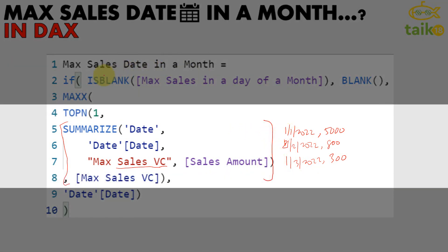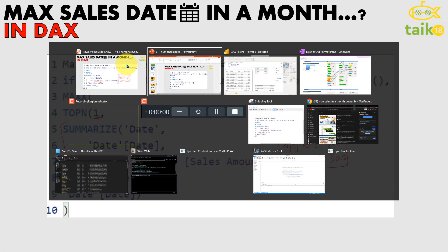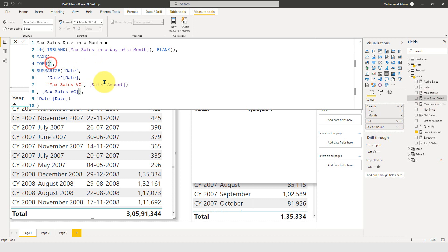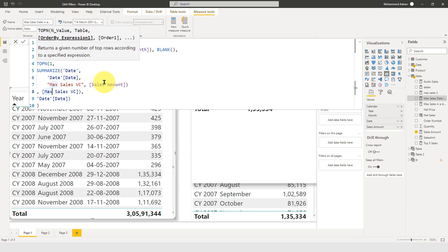After that, I'm using TOPN at the top level. What TOPN does is ask how many values to return — I'm asking it to return only one value. Then I need to pass a table, which is the virtual table I just created. If you look at TOPN in Power BI, it asks for the N value, which is 1, the table, and then the order-by expression — I'm sorting by the sales amount.